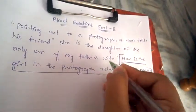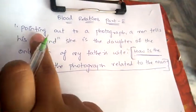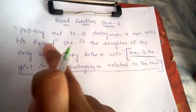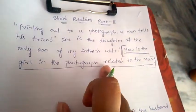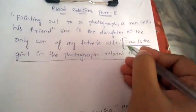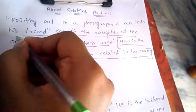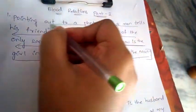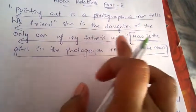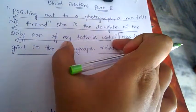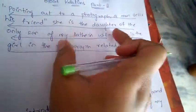Many people make the mistake of starting from the first word of the question. The correct technique is to identify the final question — the relationship between the photograph girl and the man — and then study the rest of the question in backward manner. This way you can get the solution very easily.